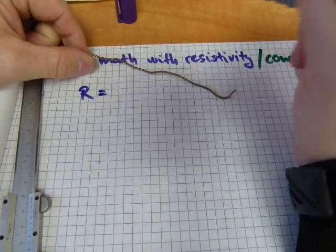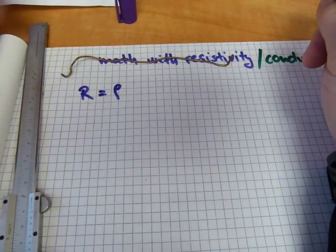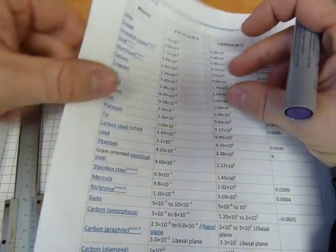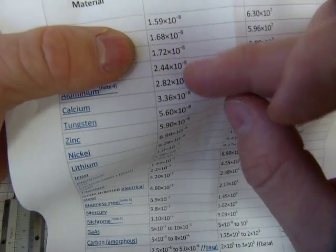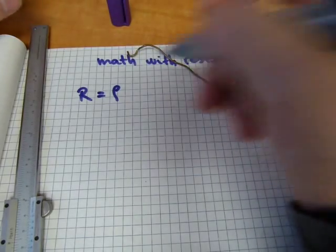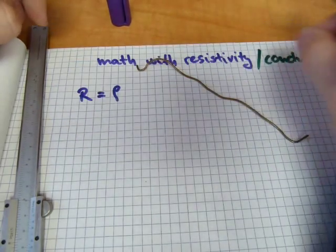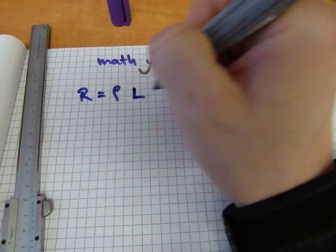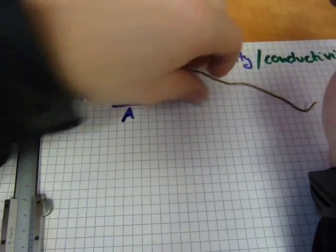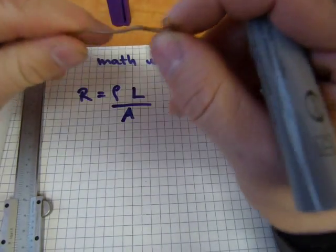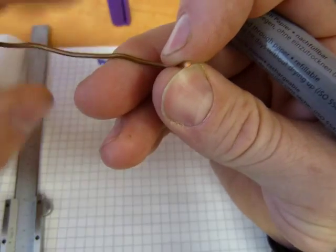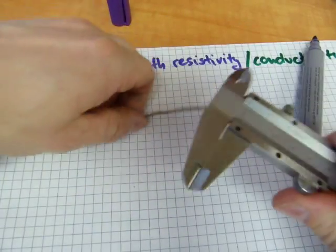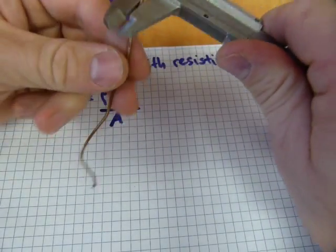Because resistance is directly proportionate with rho, the resistivity number coming out of those exponent numbers with negative 8 powers, directly proportionate with resistivity and length, and inversely proportionate to the area of its cross section. So we're going to calculate the cross section of a copper wire and for that reason I have here a handy dandy metric caliper.